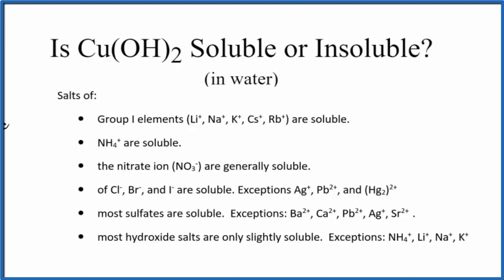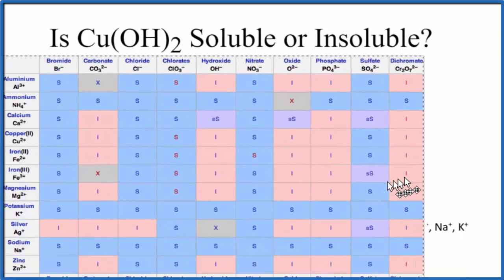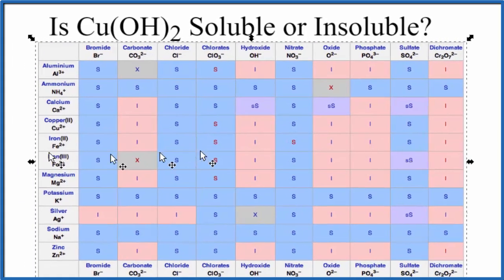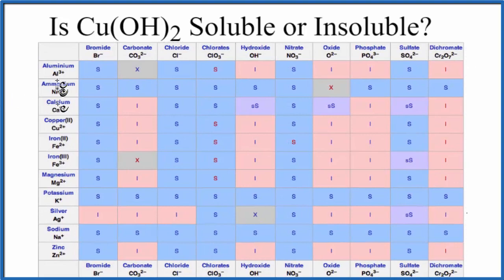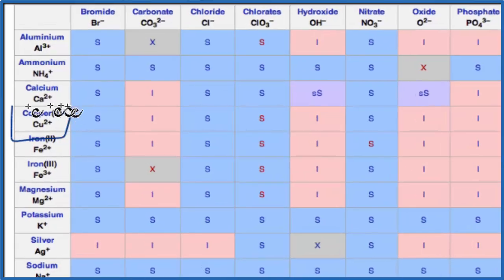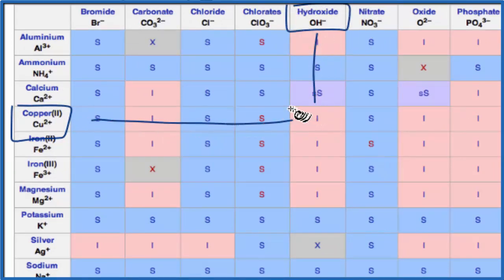We could also look at a solubility chart. So, here is a solubility chart. We're looking for copper right here, Cu²⁺, and then the hydroxide, the negative ions there across the top, OH⁻. So, we go down and over, and the solubility chart is saying that it's insoluble, that it won't dissolve when we put it in water.